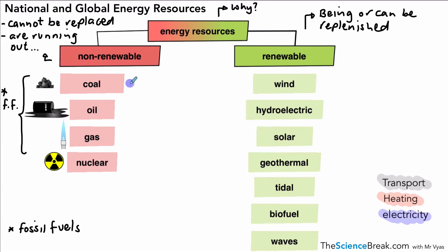Let's look at which non-renewables are used for which purpose. Coal is used a lot for generating electricity. Oil and gas can also be used for generating electricity. Nuclear energy is used a lot for generating electricity. In terms of transport, oil is used a lot and gas can be used although it's not as common. Coal and oil can be used for heating, and so can gas — you've heard of gas central heating.